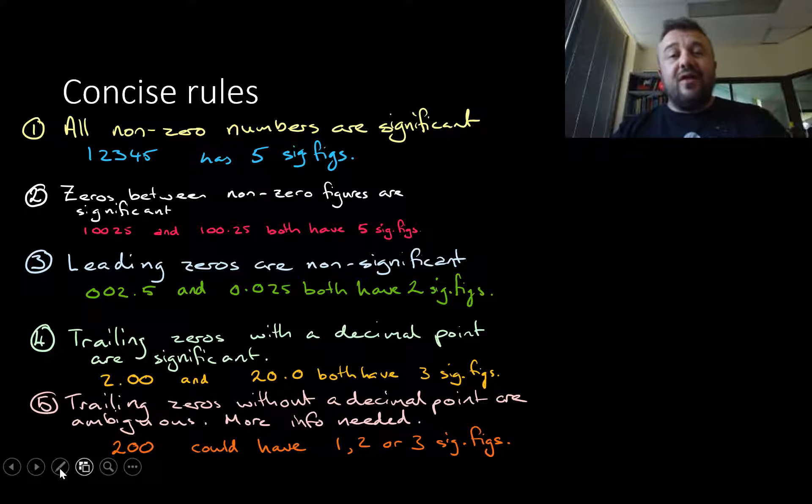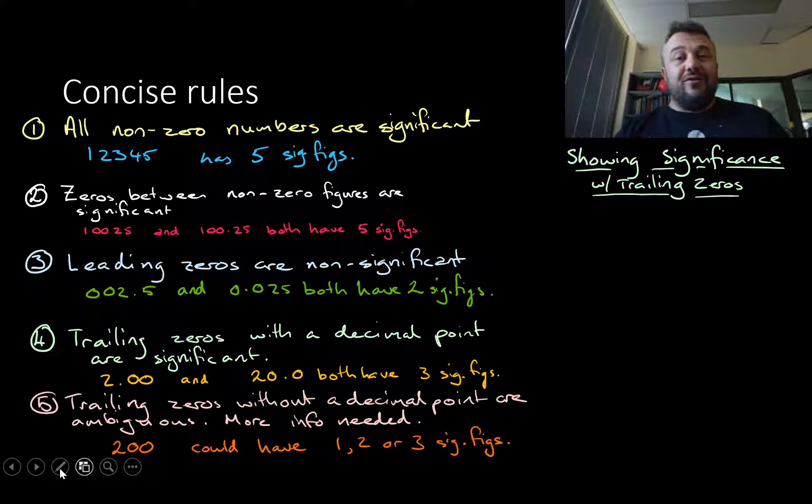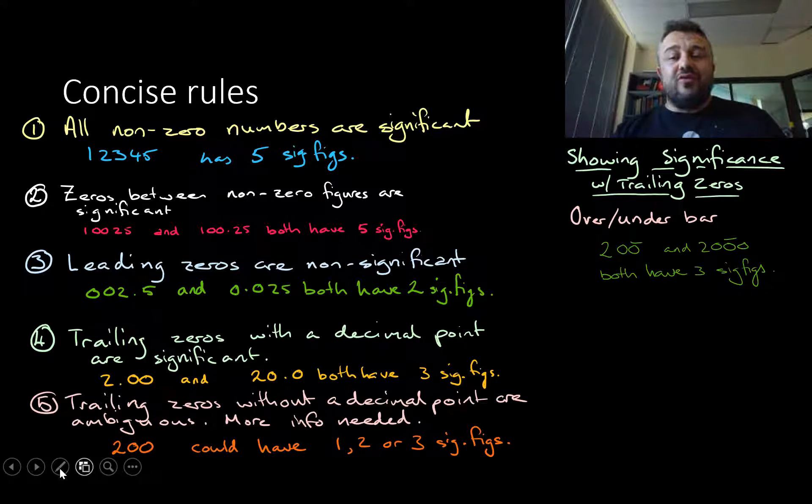It is significant. Now when you're giving an answer, for example, you should not have ambiguous significant figures and there are a couple ways to work around that. Let's show you. So if you want to show significance with trailing zeros, cool, right? You can use an overbar or underbar. There's one way to do it. I like it, it's nice and simple. For example, 200, so this 200 and 2000 here, both have three significant figures.